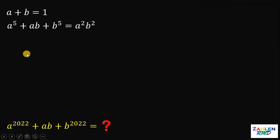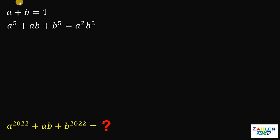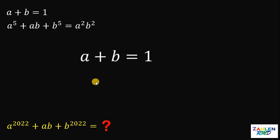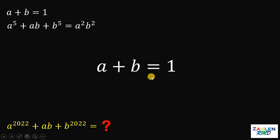The given is a plus b equals 1, and a raised to the fifth power plus ab plus b raised to the fifth power equals a squared times b squared. The first thing we need to do is work with the first equation: a plus b equals 1.